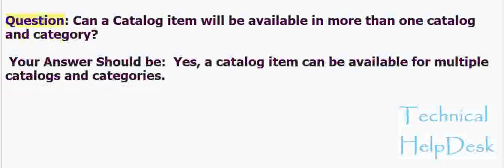Question: Can a catalog item be available in more than one catalog and category? Yes, a catalog item can be available for multiple catalogs and categories.